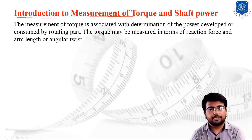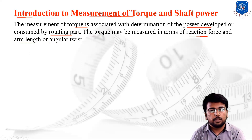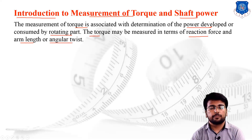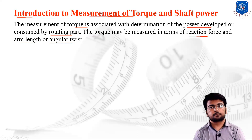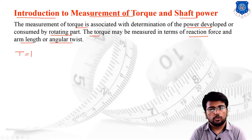For the measurement of torque, it is required along with the determination of the power developed or consumed by the rotating part. The torque may be measured in terms of the reaction force and the arm length, or the angular twist. We can write torque T = F × L, where F is the reactive force and L is the arm length.